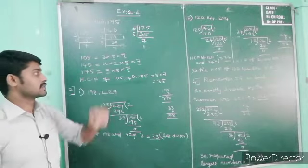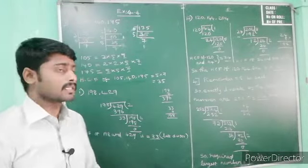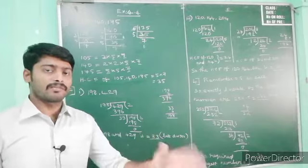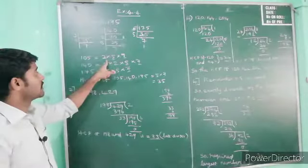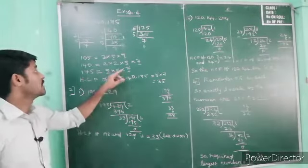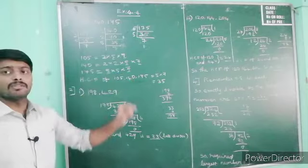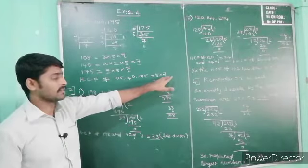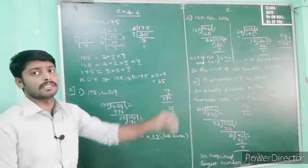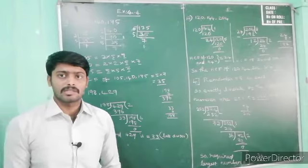HCF of 105, 140, and 175: after writing all the prime factors of the given numbers, you have to see what are all the common numbers. HCF means highest common factor. Three, if you take, is not in both numbers. Two, if you take, is not in all three numbers. Common numbers are: five is common, so I have written five. Next, seven is also common in all three given numbers. So five multiplied by seven — five sevens are 35. So 35 is the highest common factor of 105, 140, and 175.